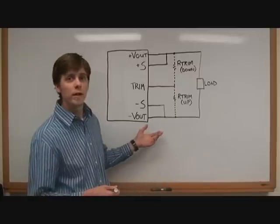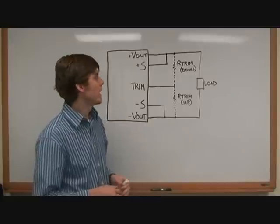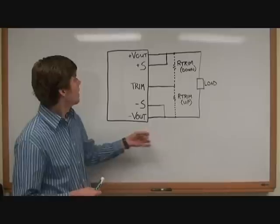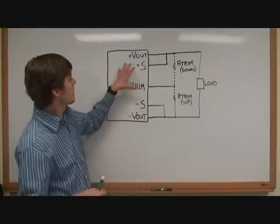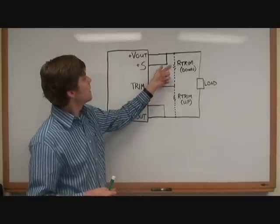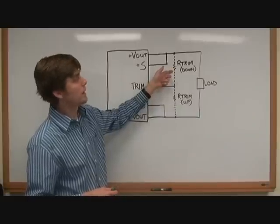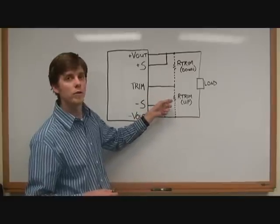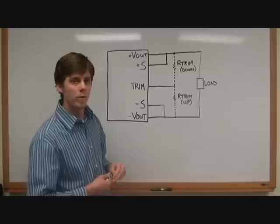So if you look at the data sheets for our products that have the output voltage trim functionality, you'll see a schematic that looks something like this. This represents a converter here, and in the data sheet there's some other circuitry in here that I'm not showing. And you see dash lines showing where to connect R trim for trimming the output voltage down from nominal, and then the location for connecting R trim to trim up from the nominal output voltage.